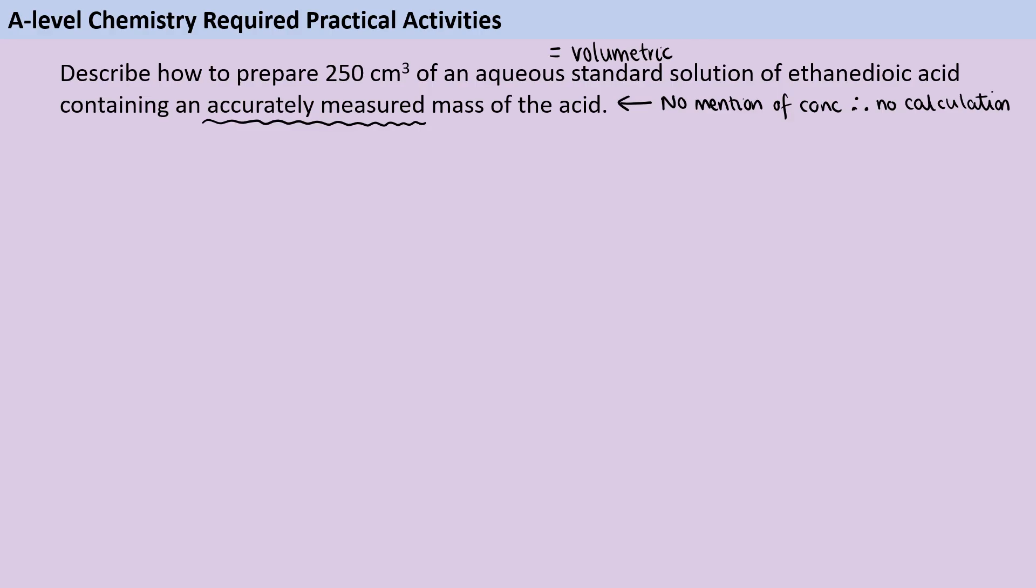So to start with, the whole point of a standard solution is that you know precisely what the concentration is, and therefore you need to know precisely how much of the compound you've added to that solution. So our first step is to accurately weigh out a dry sample of this compound, and when we say accurately weigh it out, that means using a high precision balance, or you could just say a balance that can read out to at least two decimal places.